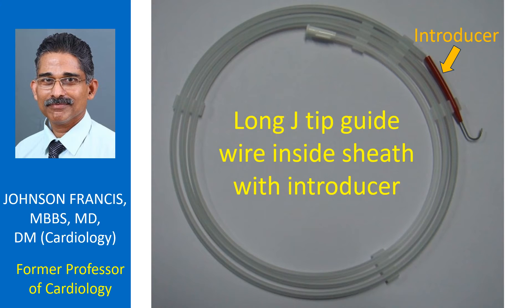The thickness of the guide wire depends on the type of application. Guide wires for PTCA balloons are very thin, of the order of 0.014 inch, while guide wires for catheters are 0.032 to 0.038 inch.